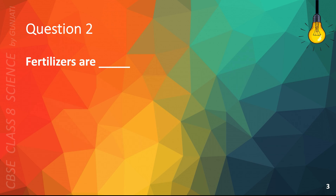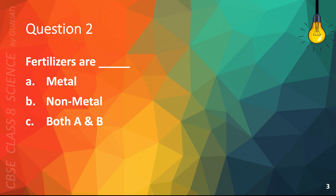Question 2. Fertilizers are — A, metal; B, non-metal; C, both A and B; or D, none of the above. The correct answer is B, non-metal.